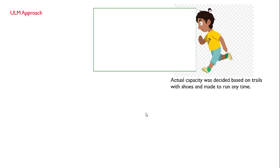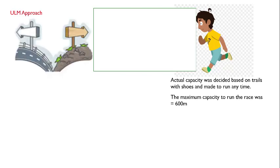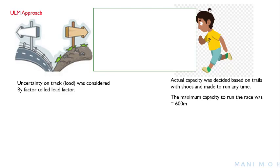Now let us see the ultimate load method approach. In this approach, I actually decided your capacity based on trials — I made you run with shoes at any time. Based on that, your capacity is 600 meters. In the ultimate load method, the uncertainty in track conditions or the type of track is considered using a factor called the load factor.